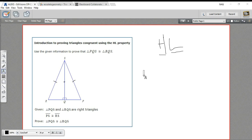I think the first thing we need to do is state the given that these are right triangles. Otherwise, HL doesn't work at all. So triangle PQS and triangle RQS are right. Okay. And the reason is given. Okay.